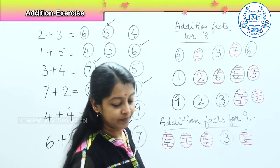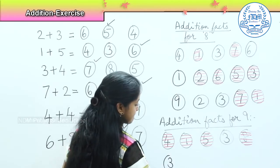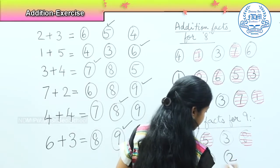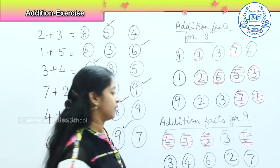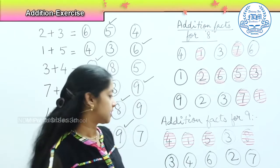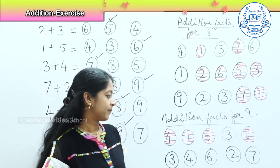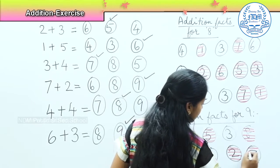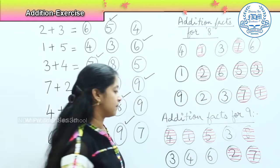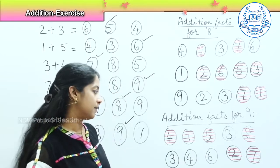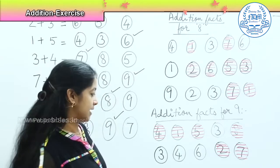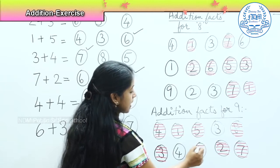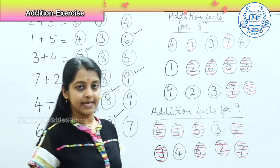Shall we do the next question? What is the combination here? See the board and tell. Very good. When I add 2 along with 7, it gives me the number 9. Is there any other number with which we can make 9? Yes — there is one more addition fact: 3 and 6.